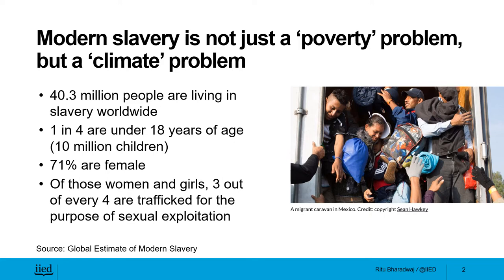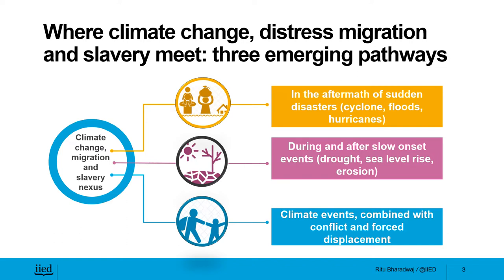Climate change and climate-induced distress migration is worsening the existing vulnerabilities of slavery. Evidence indicates that the nexus between climate change, distress migration, and slavery exists along at least three pathways. The first is in the context of sudden or extreme climatic events — for example, cyclones, floods, and hurricanes — which lead to displacement of communities who are forced to stay and survive in temporary relief camps or shelters.